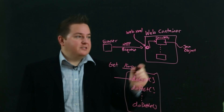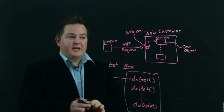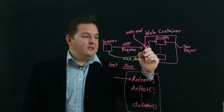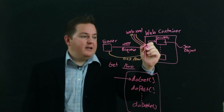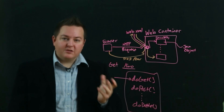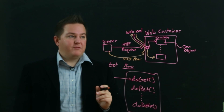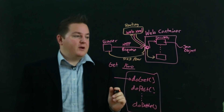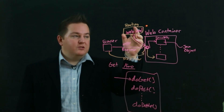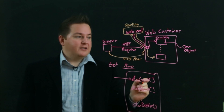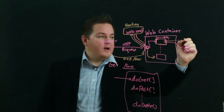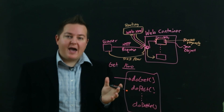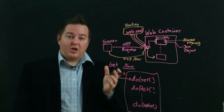The web.xml is a specialized file that tells the web container how to handle incoming requests. For example, if we get a new request for slash bar as a POST, it looks in the web.xml file, finds the servlet it should go to, and routes the request to the appropriate servlet based on what's specified there. So web.xml is essentially where routing is specified. The web container handles the lifecycle and uses this routing table to decide which servlet should receive requests, and then the individual servlets process those requests.